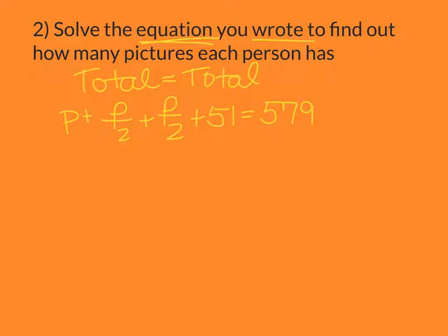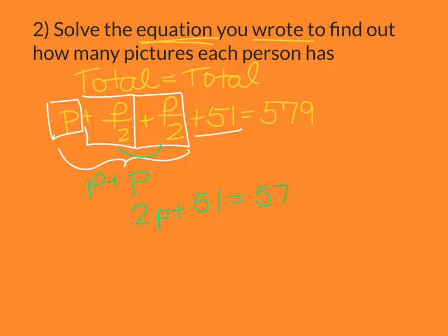First thing I know I need to do is to combine like terms. So I keep anything that has a variable together, anything that doesn't on its own. All my boxes are already together. This should look very familiar. Another practice just like the last warm-up. So I know this P divided by 2, P divided by 2, or half P, half P. That equals a whole one. So we've got P plus P, that's 2P plus 51 equals 579.